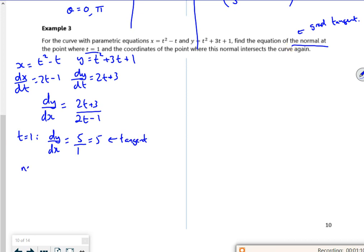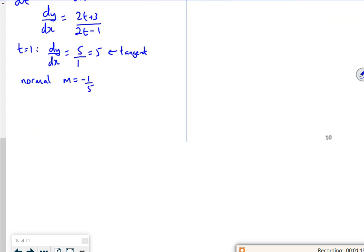So the normal has a gradient of minus 1 fifth. Right, so now I need that.